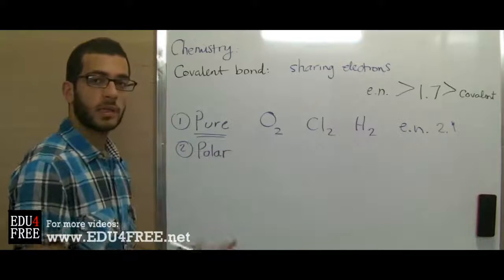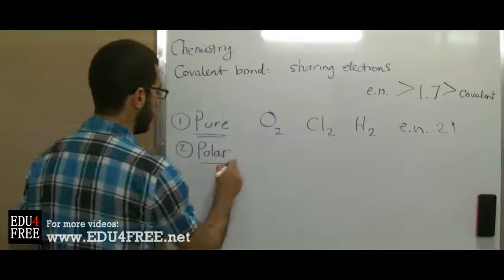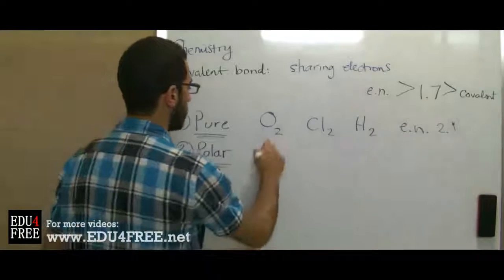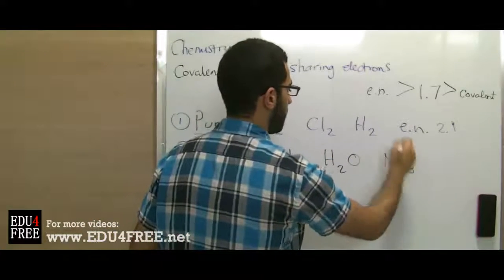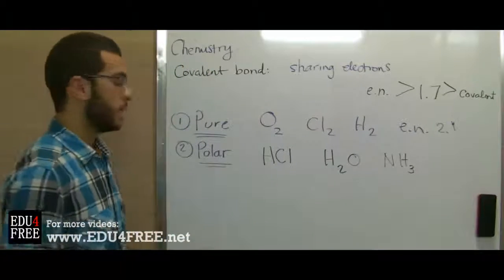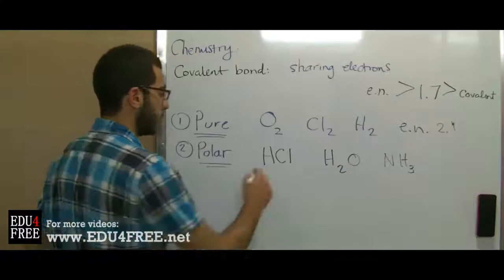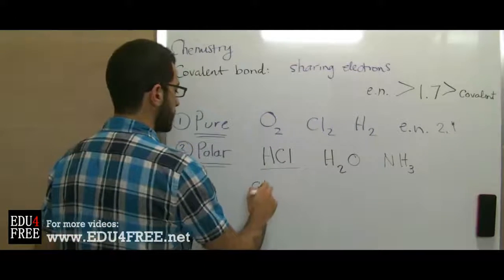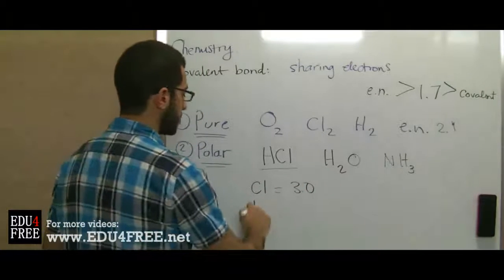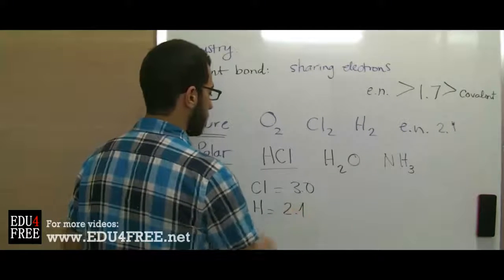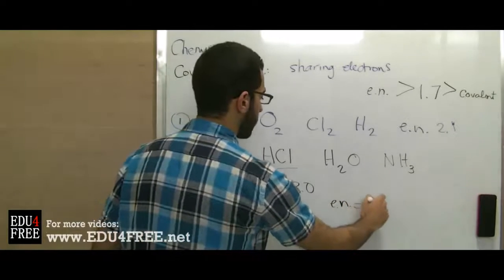But in the second type, the polar type, like in hydrogen chloride, like in water, like in ammonia, here we have partial positive charges and partial negative charges. For example, in hydrogen chloride, chlorine's electronegativity is 3.0 and hydrogen's electronegativity is 2.1, so we get the difference in electronegativity which will be 0.9.